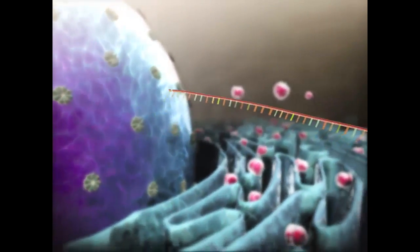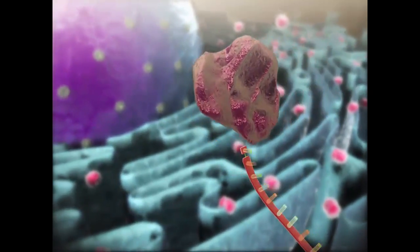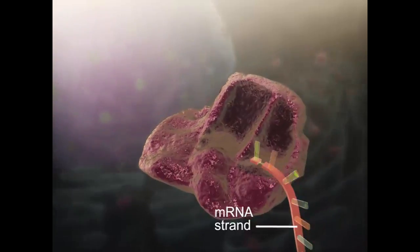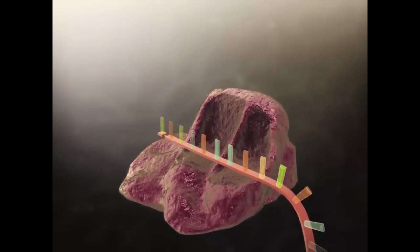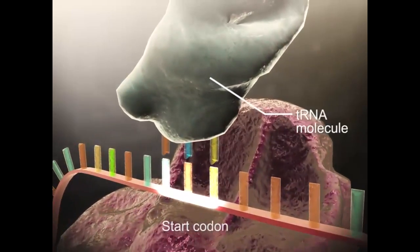Translation begins when the mRNA enters the cytoplasm and a small ribosomal subunit attaches itself to the end of the mRNA strand. At the same time, a transfer RNA molecule recognizes and binds to the start codon on the mRNA strand.